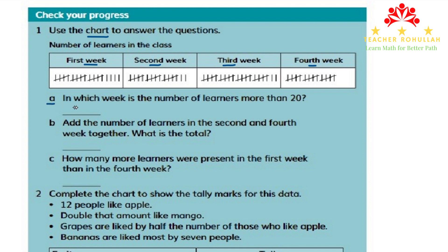Question A asks: in which week is the number of learners more than 20? We have to count the number of learners. When we record information using tally marks, we group each five marks. The first week has 19, the second week has 17, the third week has 22, and the fourth week has 15. So the answer is week 3, because only in the third week is the number of students more than 20, which is 22.